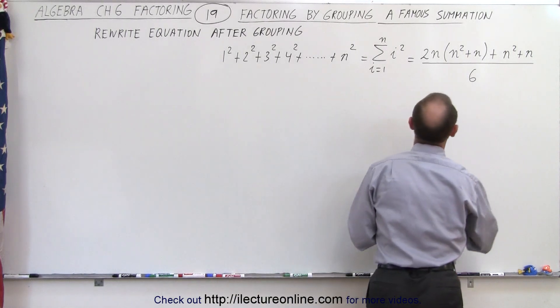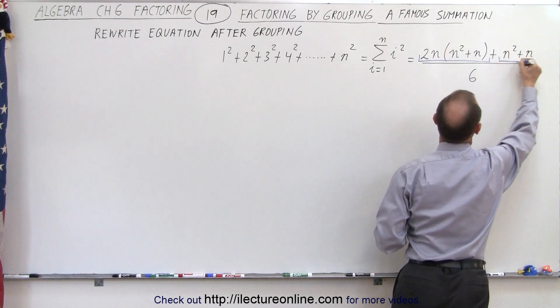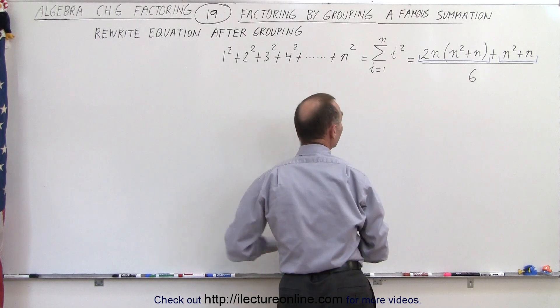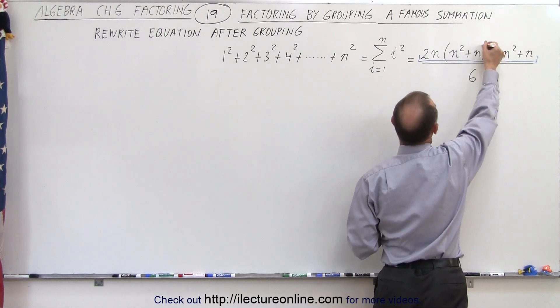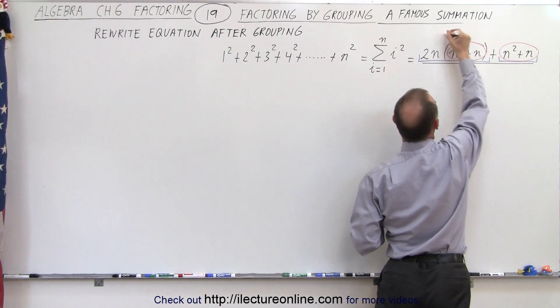I can take a look at this as being the first term and this as being the second term. Notice they each have something in common: they have the n squared plus n portion in common, which means I can factor those out.